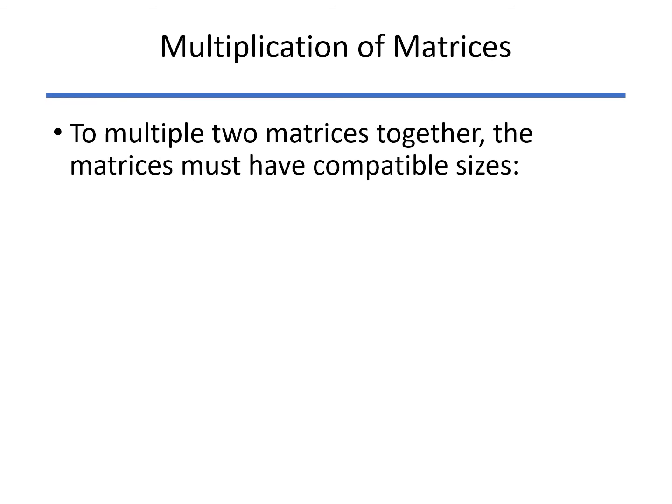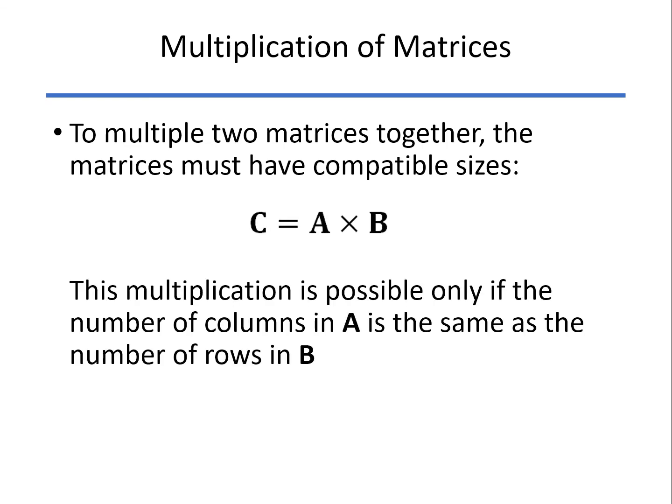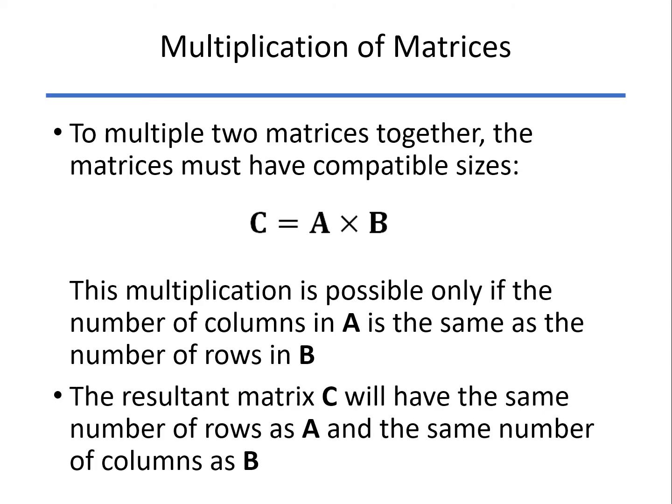To multiply two matrices together, first of all, you have to have compatible sizes. To multiply A times B, you have to have the same number of columns in A as you have rows in B. And the resultant matrix will have the same number of rows as A and the same number of columns as B.